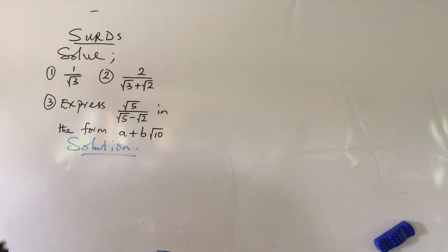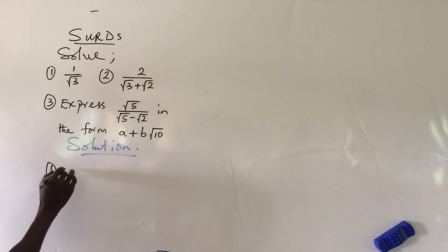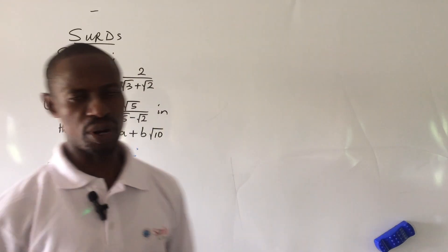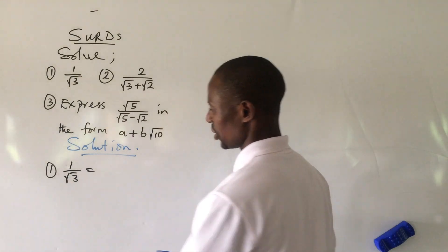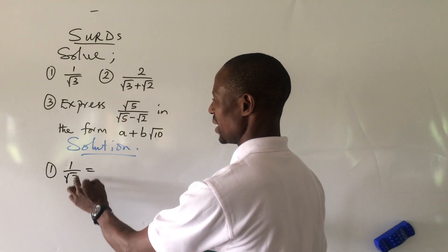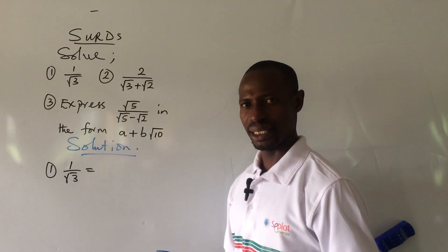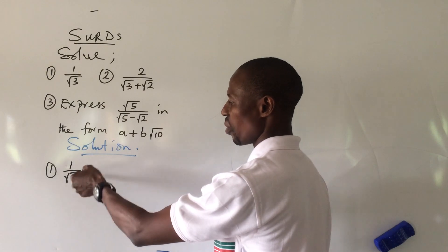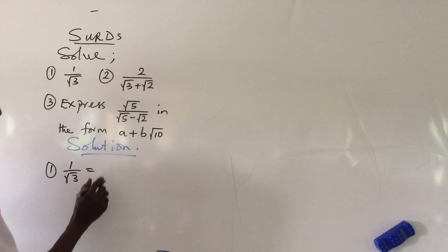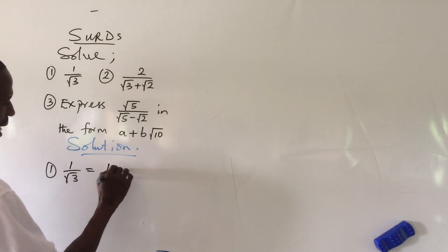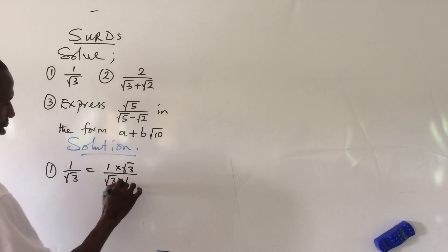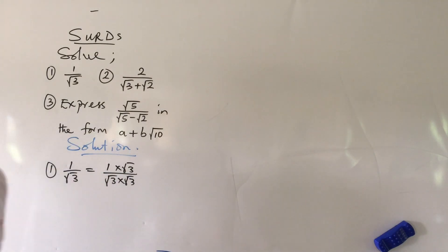For question one, we have 1 over root three. Because we are having a surd in the denominator, we rationalize the denominator. That means we multiply the numerator by the denominator and multiply the denominator by itself again. So that gives us 1 times root three all over root three times root three.